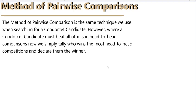However, when we're searching for a Condorcet candidate, one candidate must beat all others in head-to-head comparisons. When we're using the method of pairwise comparisons, we simply will keep track of who wins the most head-to-head competitions and declare that choice or candidate to be the winner.